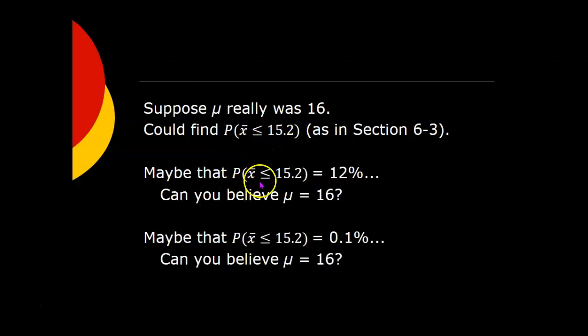Now suppose you do that, and that probability comes out to be 12%. That would mean that if the company was right about the average number of chocolate chips per cookie being 16, you've still got a 12% chance of getting a sample where the average number of chocolate chips per cookie in that sample was the kind of thing you found, lower than 15.2. So if something has a 12% chance of being true, you can't rule it out. It happens sometimes. So I can still believe, it's still possible that the population mean really is 16.